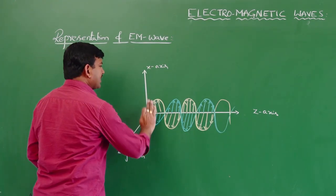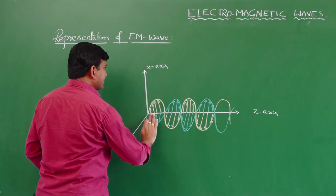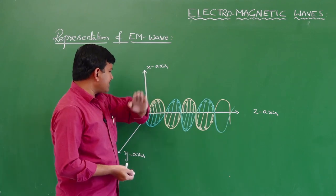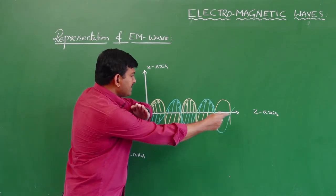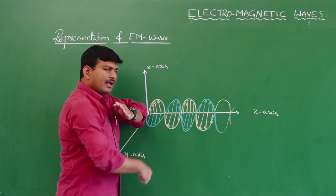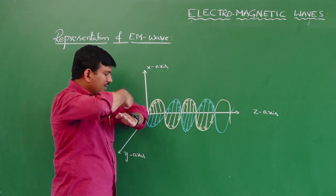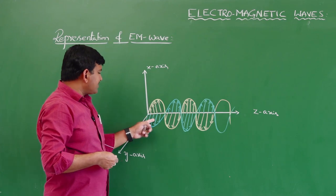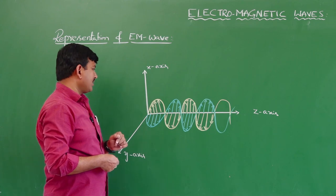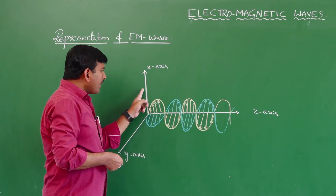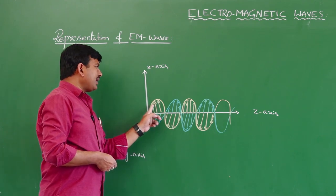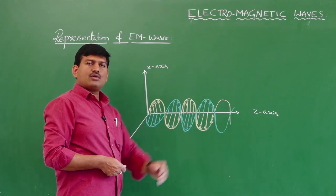The electrical wave oscillates along the x-axis, up and down. The z-axis is the direction along which the wave propagates, the x-axis is along which the electrical vector vibrates, and the y-axis is along which the magnetic vector vibrates. So the electrical wave is in the x-z plane and the magnetic wave is in the y-z plane, oscillating in mutually perpendicular planes.